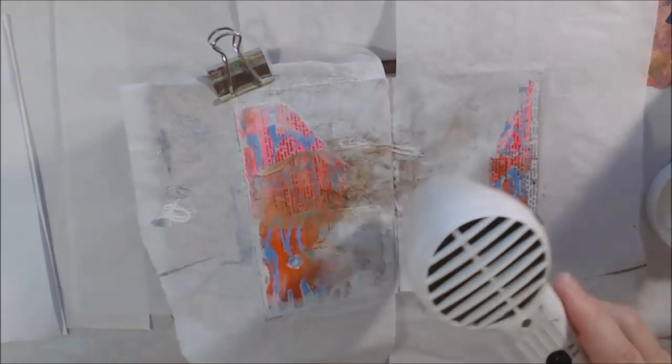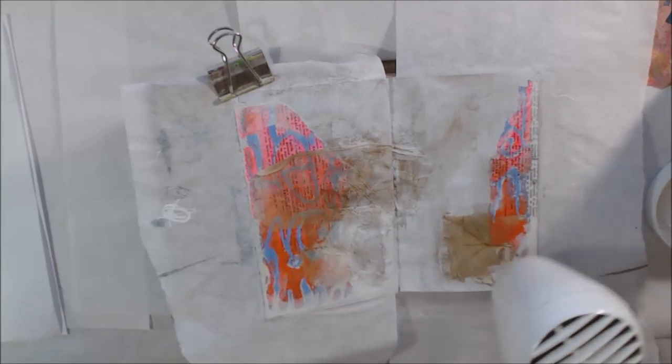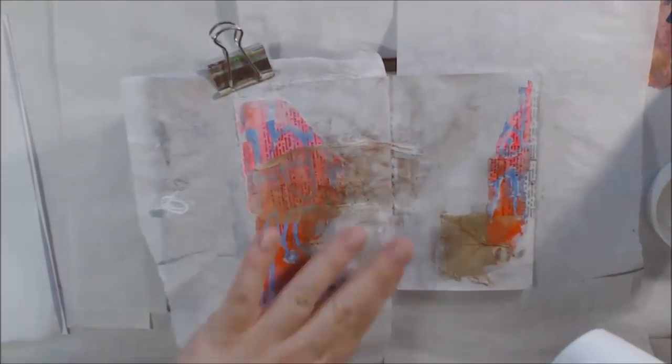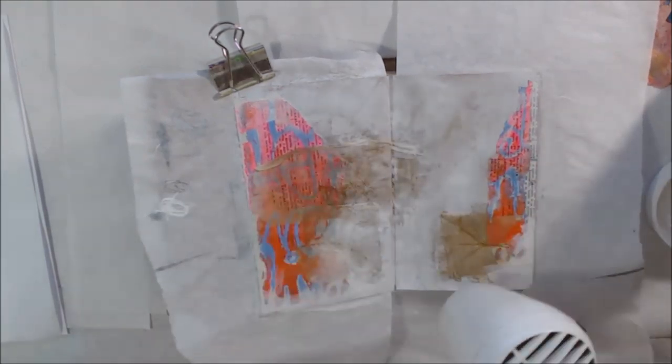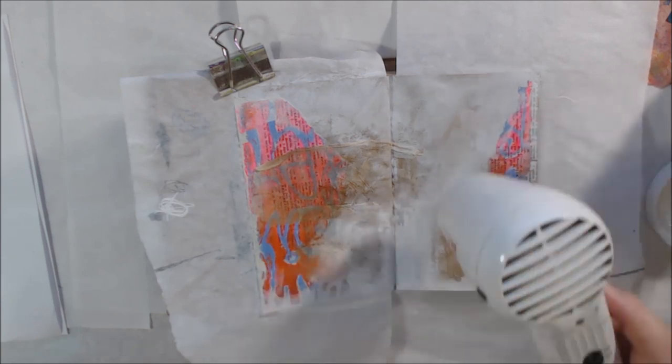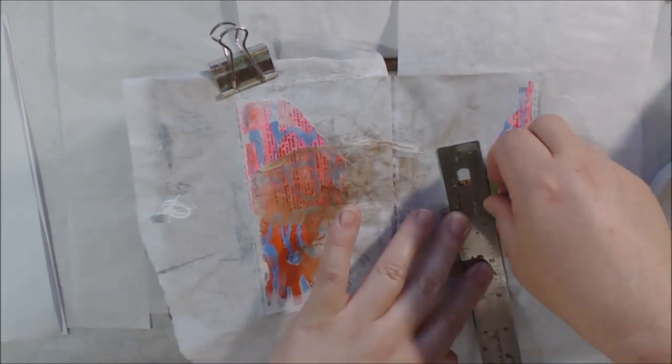This little journal—I haven't worked in it very much. I think I've only made one other page. This was given to me by Rennie. She bought it in New Orleans, loved it so much she went back and bought one for me. When I met up with her—she came down to Tucson and I met up with her for coffee—she gave it to me.